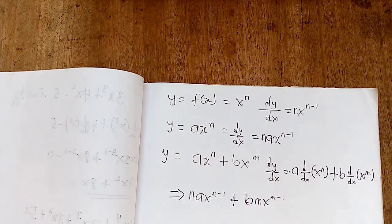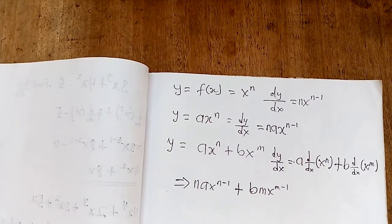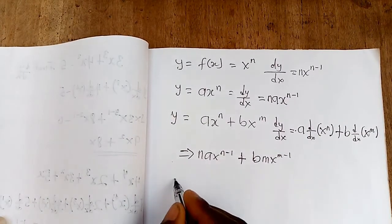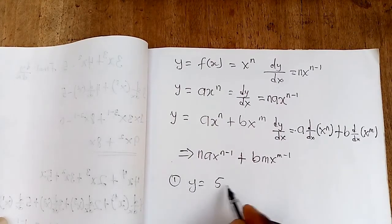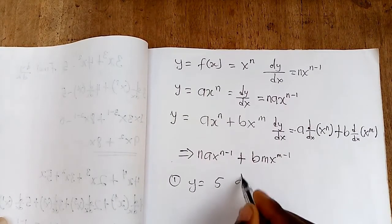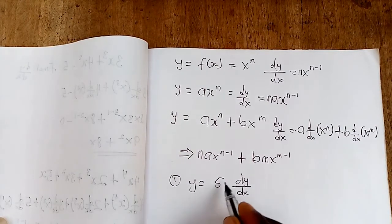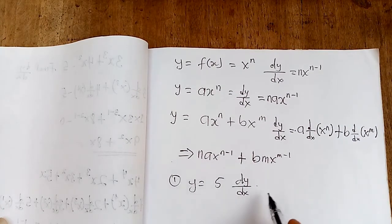With that knowledge, let's take some questions to find the derivative or gradient function. Question one: y = 5. We need to find dy/dx of this function. The gradient function or derivative of y = 5 — one thing to know is that whenever you differentiate a constant, the result is zero, and I'll prove it right now.